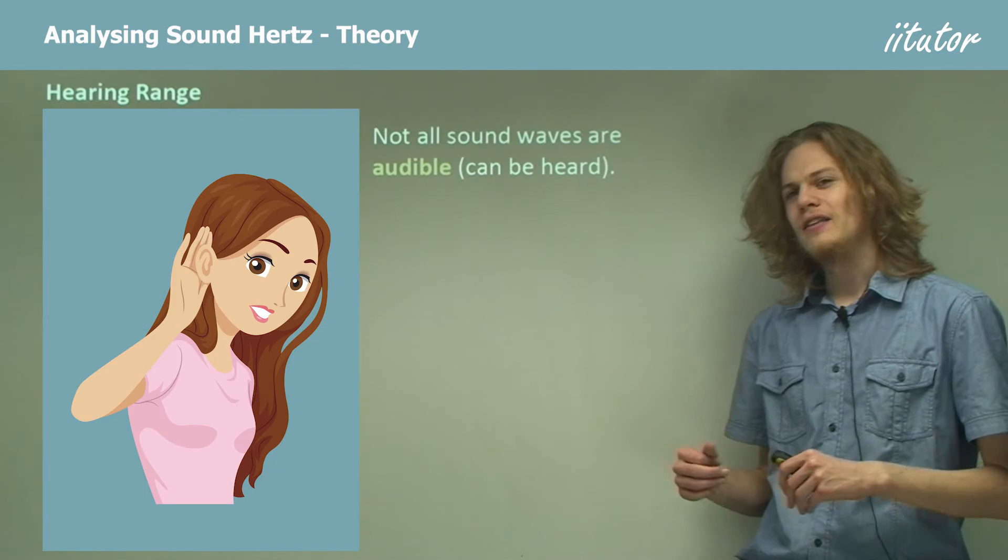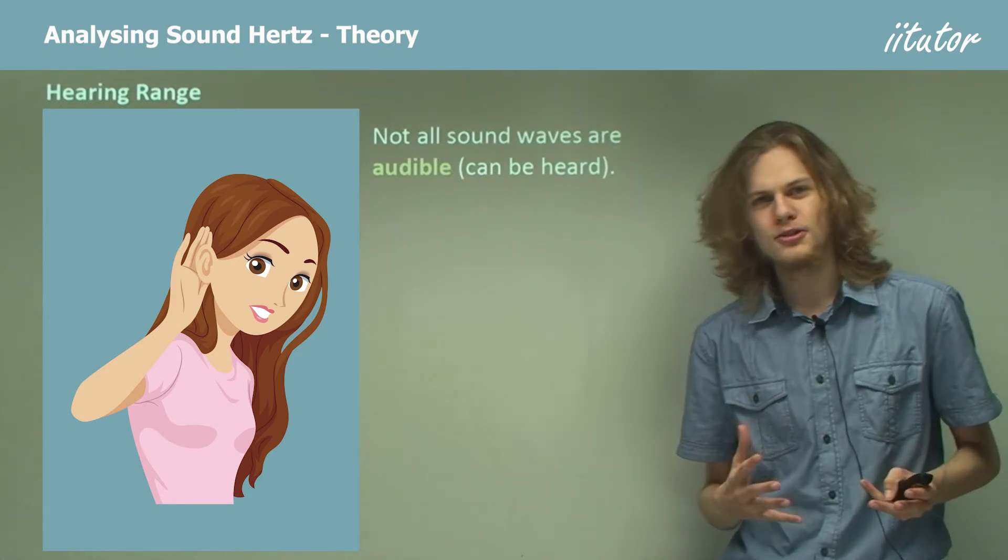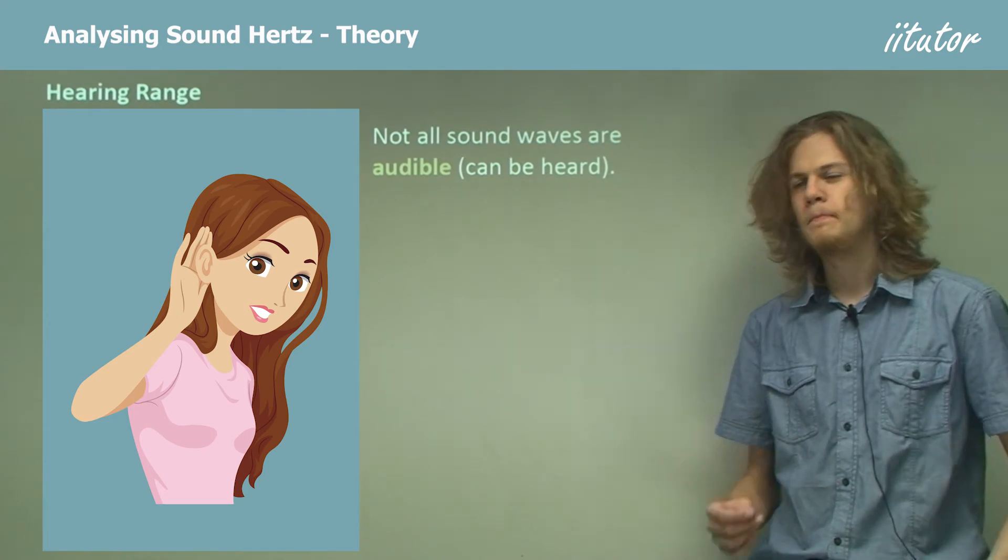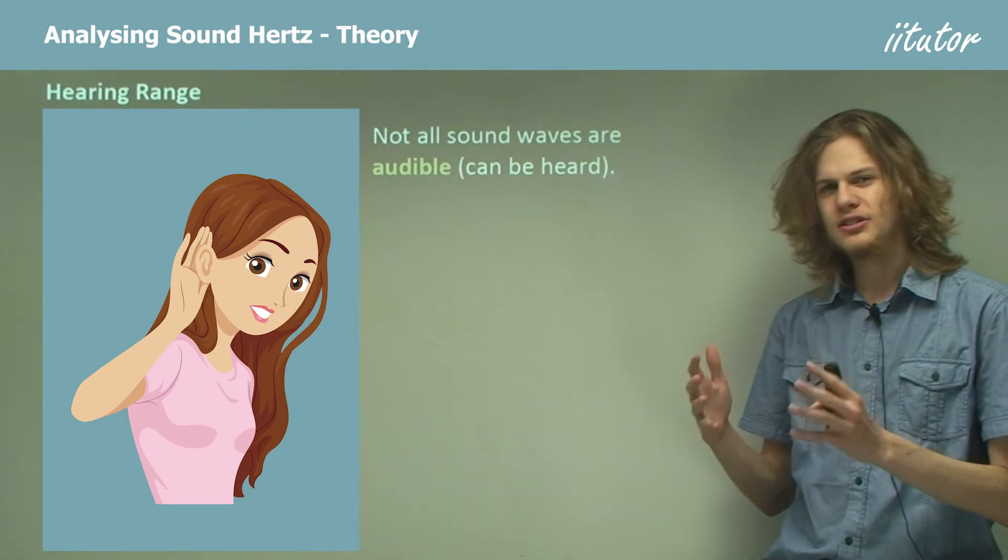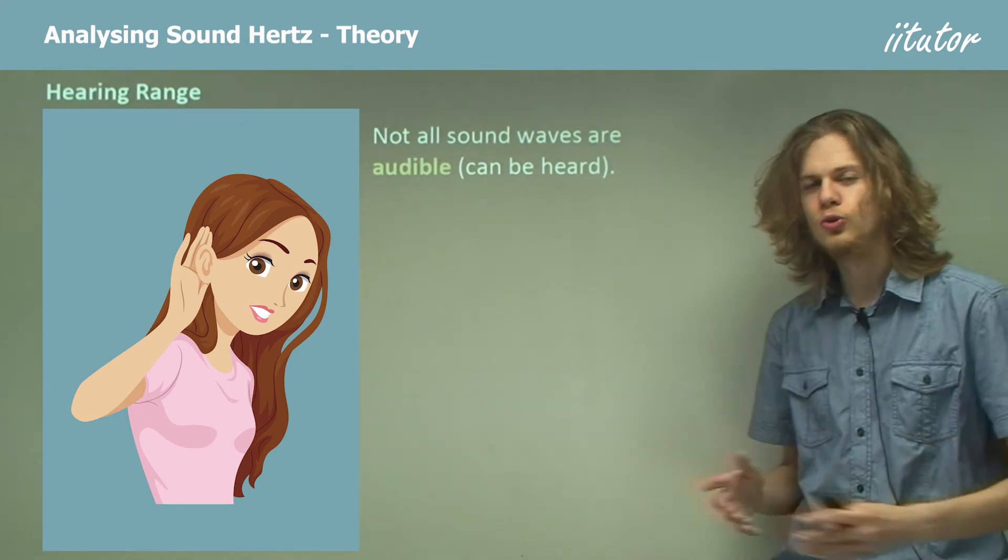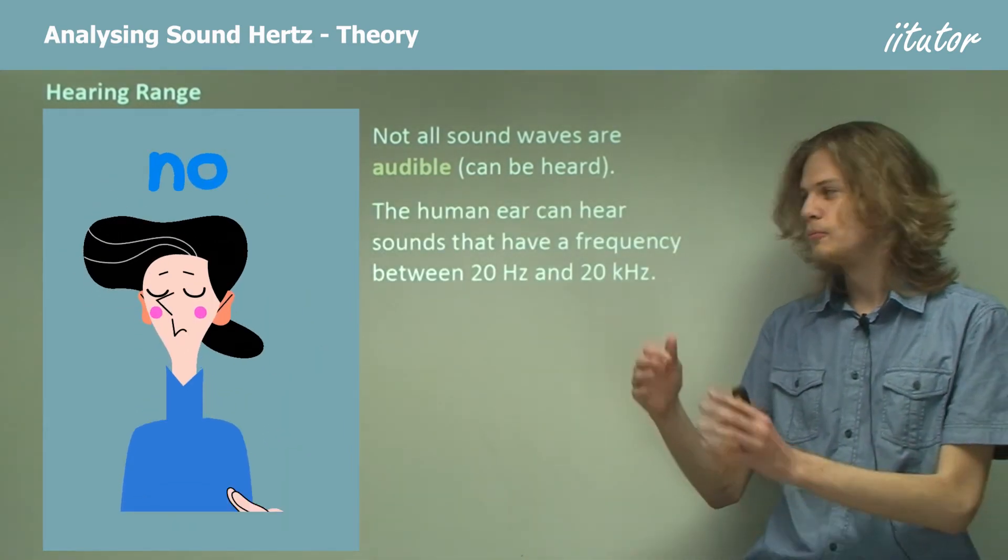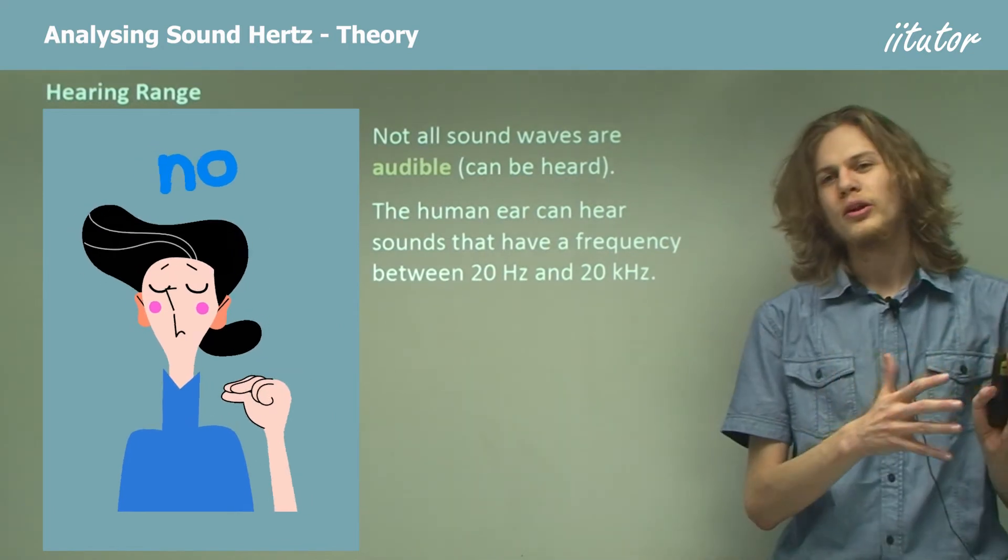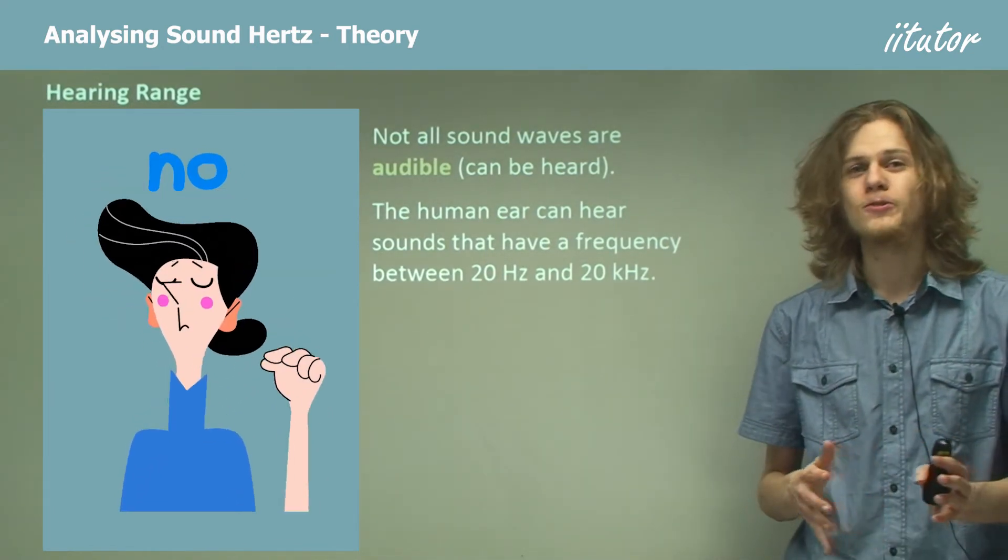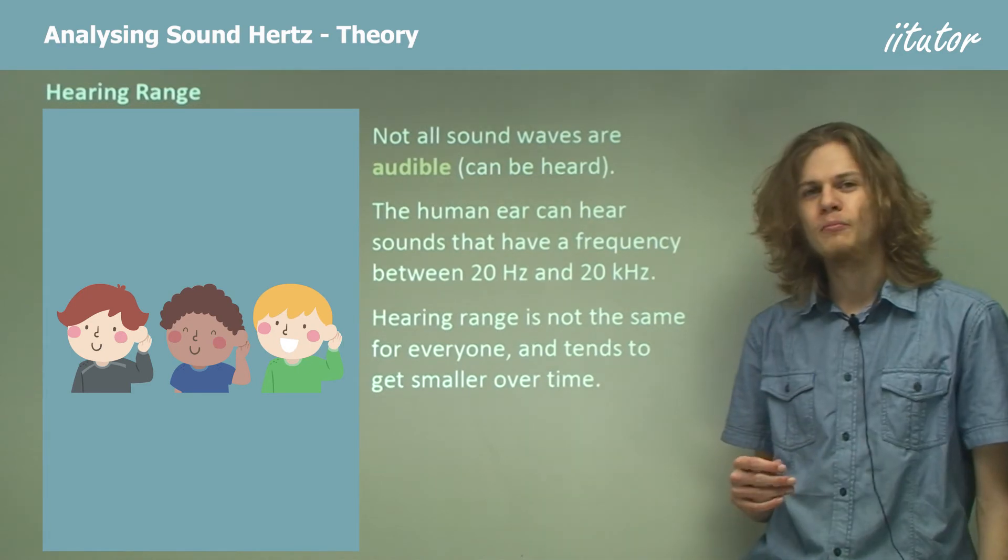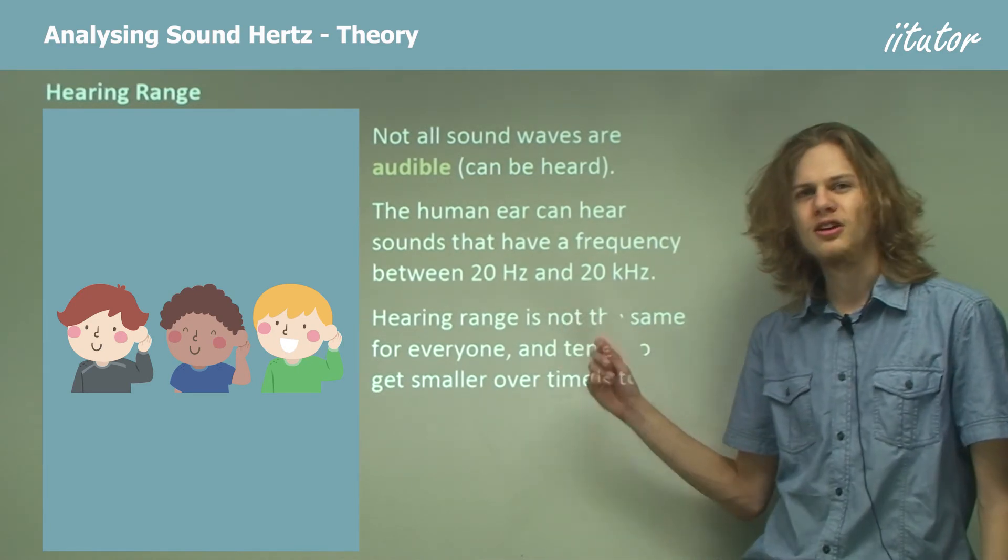Now it turns out that we can't hear all sounds. We can hear musical notes like C and A and D, but we stop hearing sound if the frequency is too large or too small. The human ear can hear sounds that have a frequency from between about 20 hertz to about 20 kilohertz, that is 20,000 hertz. But hearing range isn't the same for everyone.